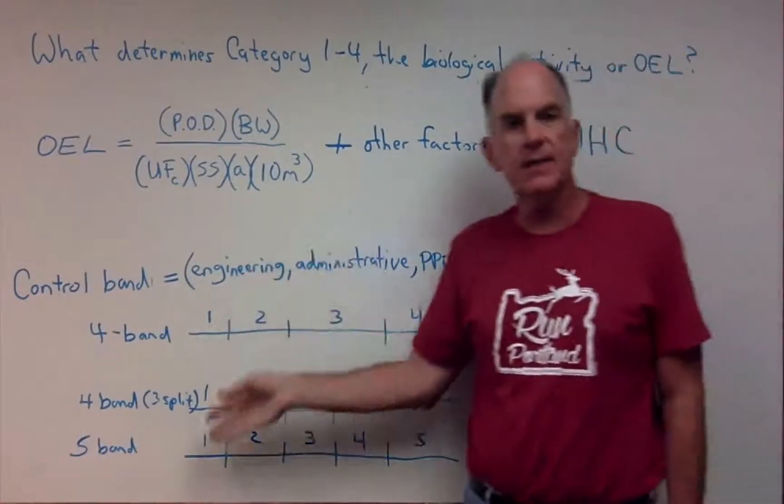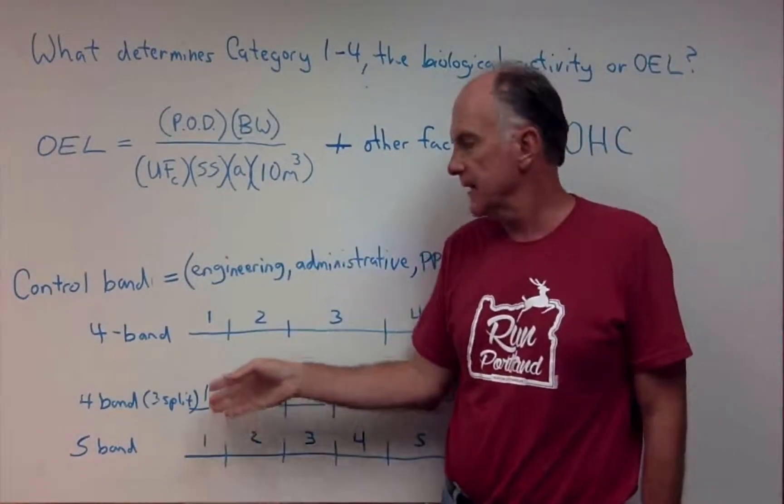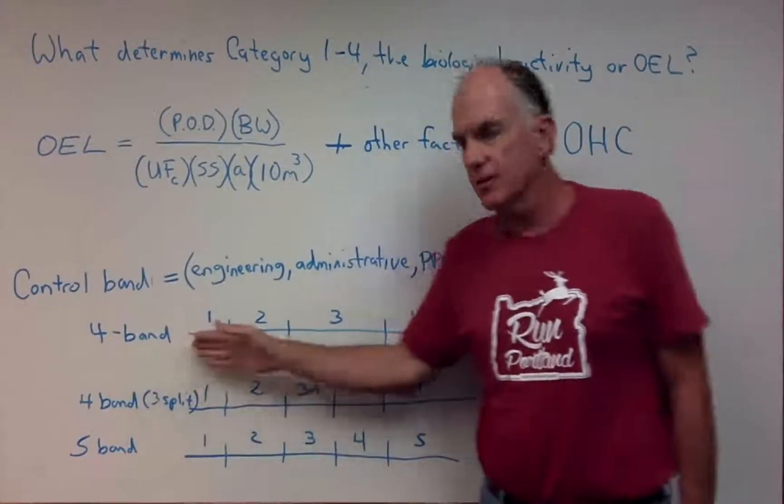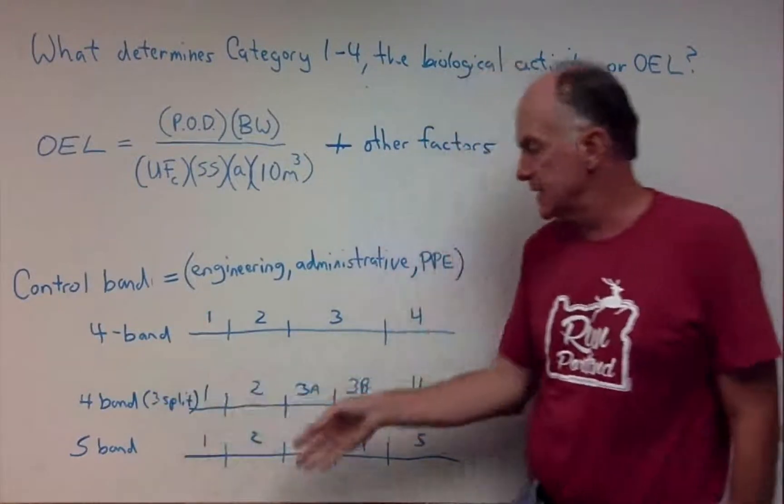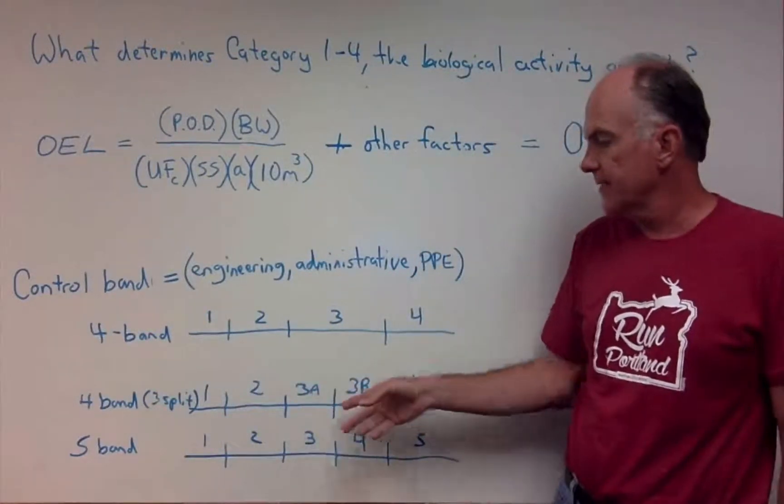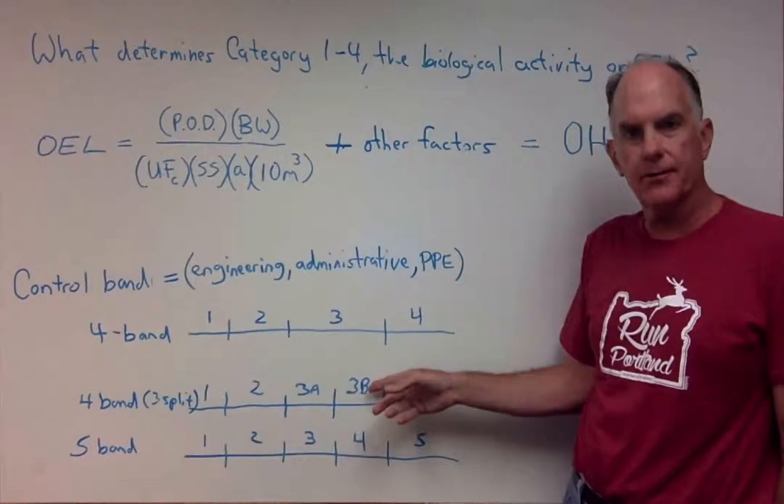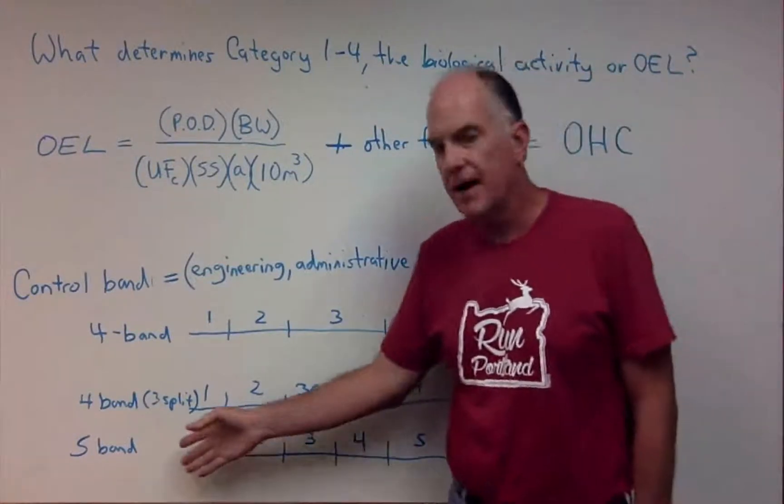Now, we have many different control banding systems out there. So you can have a traditional 4-band system. You can have a 4-band system where they split the third band, the 3-band, into a 3A or 3+. And then you can have 5-band systems.